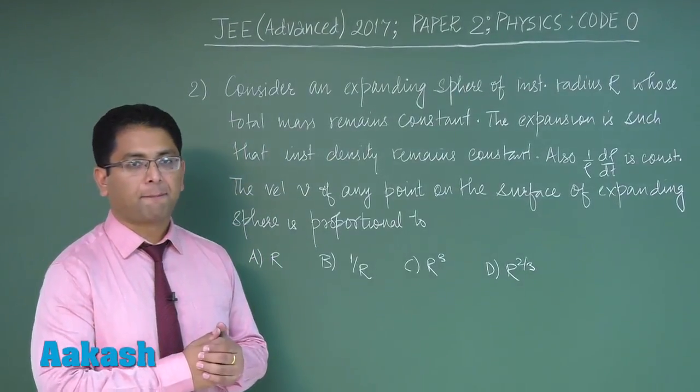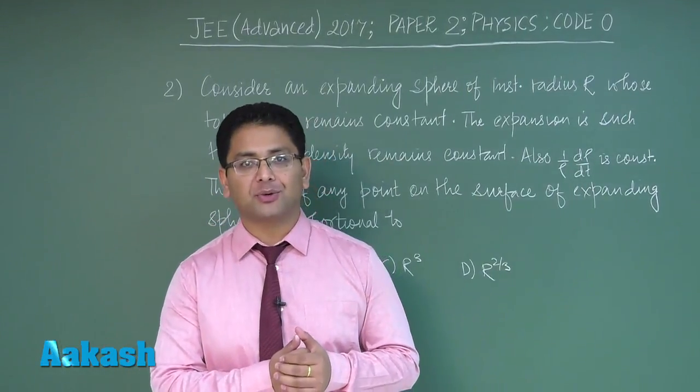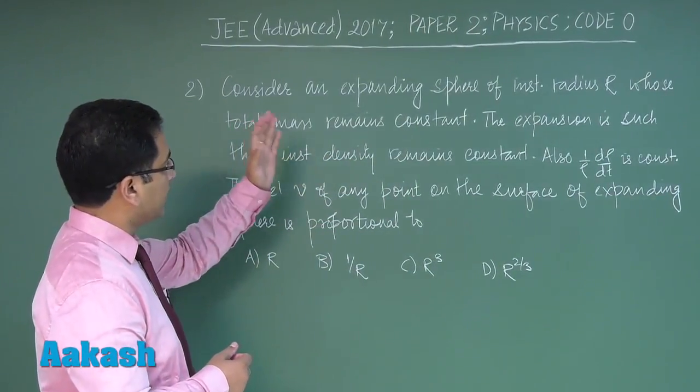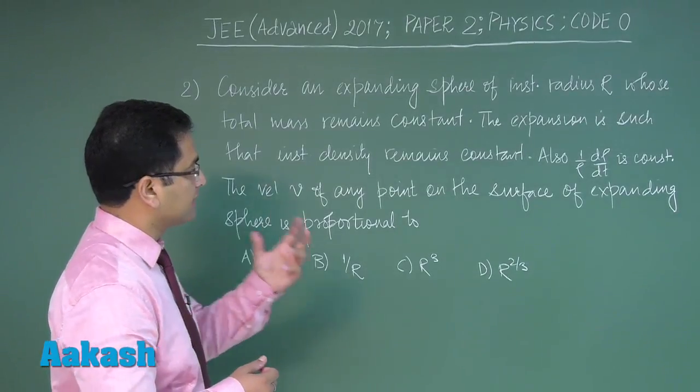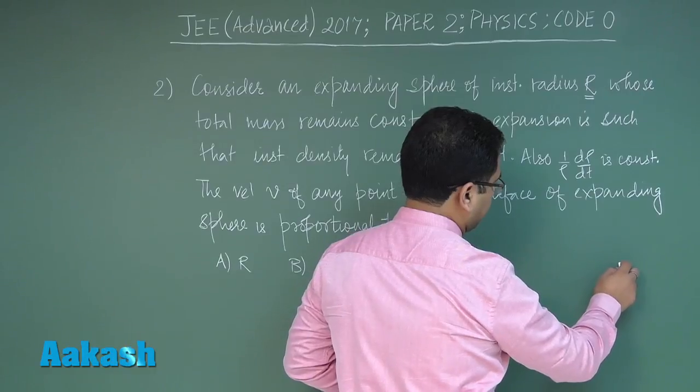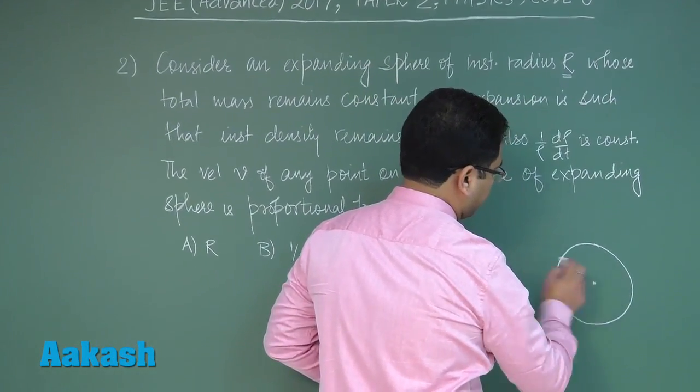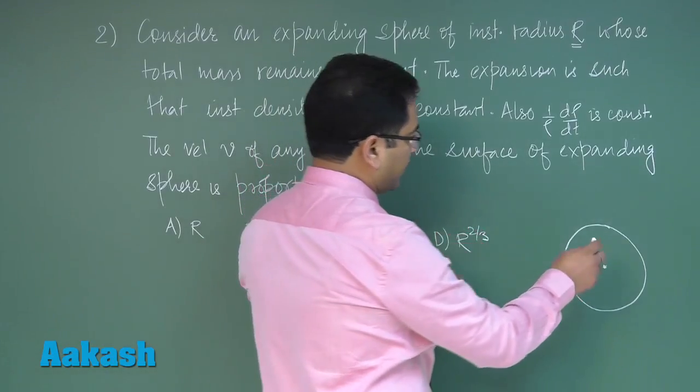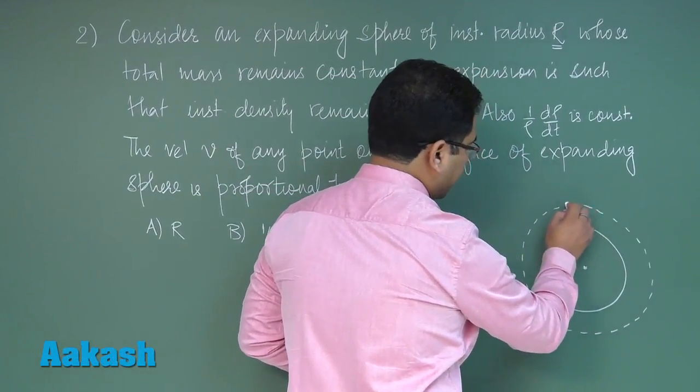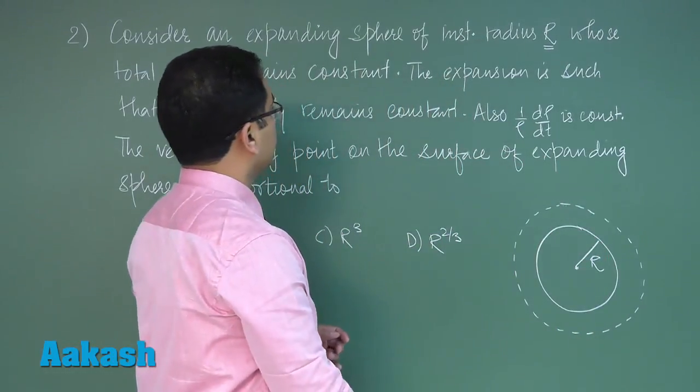Question number two: It is related to a basic mathematical IQ. Let's try to see this question. It says consider an expanding sphere of instantaneous radius R whose total mass remains constant.